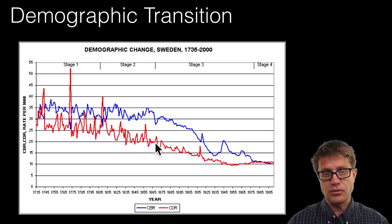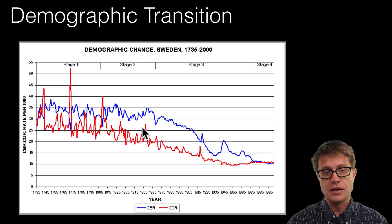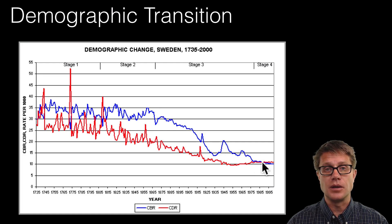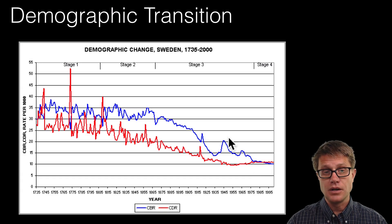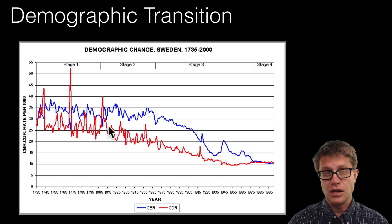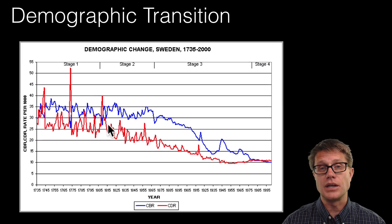But what happens over time is the death rate drops off first and then the birth rate drops off second. And then you can see they reached each other at the same point. So what happened to the population of Sweden during this demographic transition it increased and then it became stable.